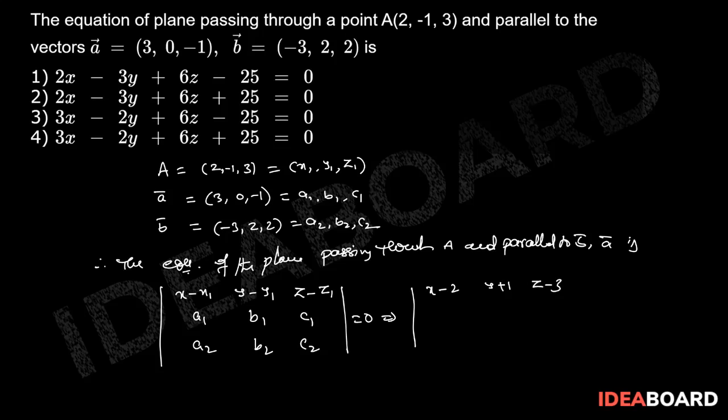That implies x minus 2, y plus 1, z minus 3, second row is 3, 0, -1, third row is -3, 2, 2, that equals 0.